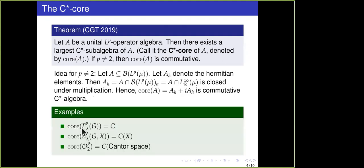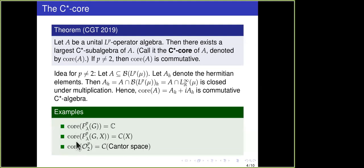Let's see some examples. If you take the group algebras, then the core is just the complex multiples of the identity. If you take a dynamical system and look at the core of the cross product Banach algebra, you get back C(X). And if you take the LP Kuntz algebra, you get continuous functions on the Cantor space. This shows that the core reflects some part of the underlying dynamics of the Banach algebra. So we recovered the space X from the cross product, and next we want to recover the action.